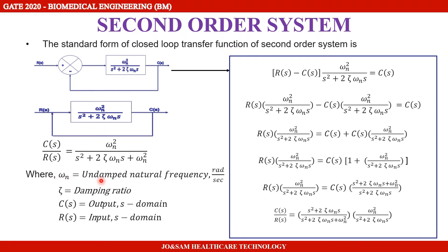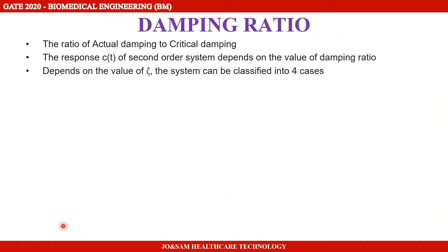In this equation, ωn is the natural frequency — the undamped natural frequency — with units of radians per second. τ (tau) is the damping ratio. C(S) and R(S) are the output and input respectively in the S domain. The damping ratio is defined as the ratio of actual damping to critical damping.